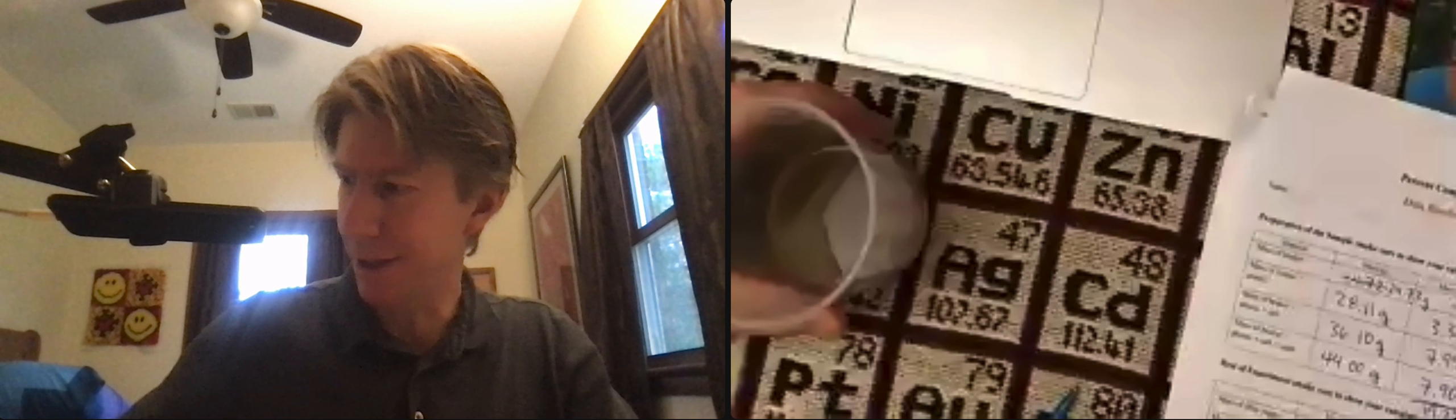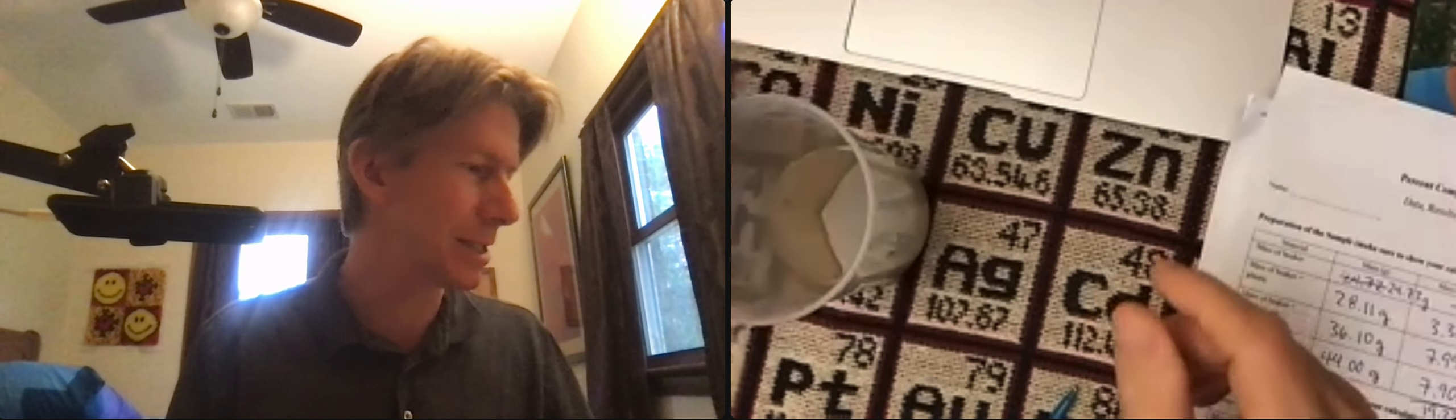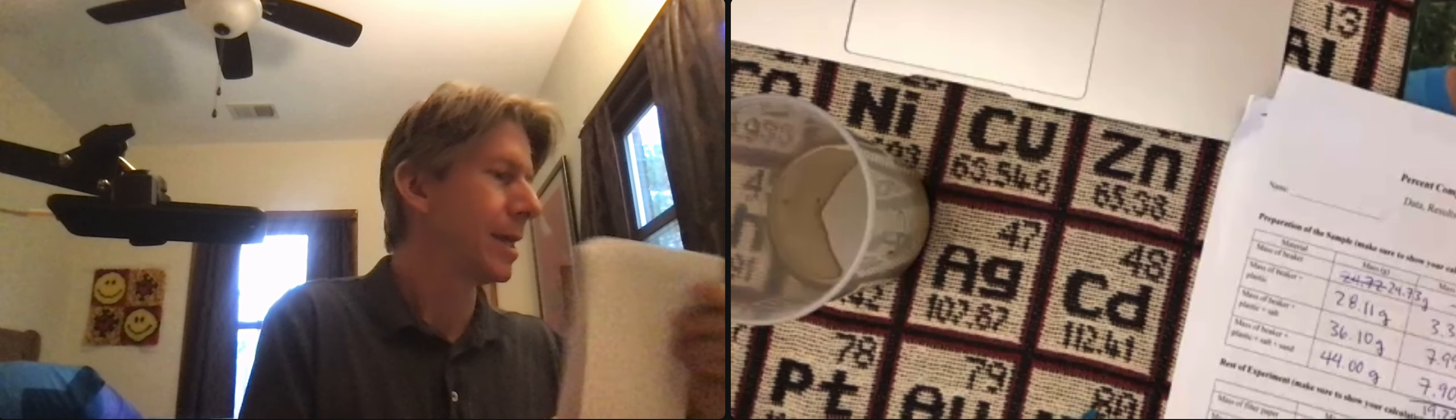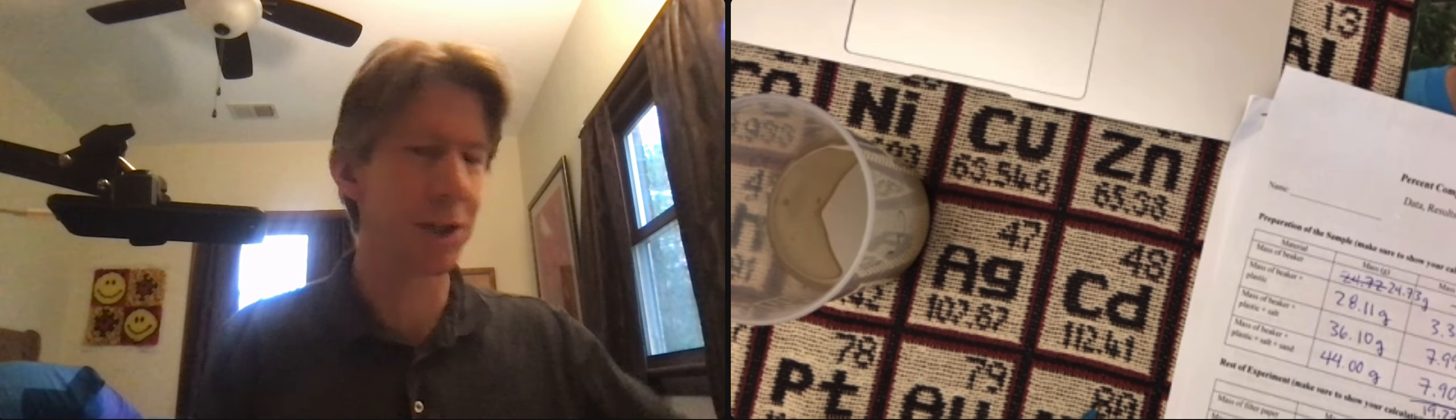We're going to set aside the 50 milliliter beaker with the plastic pieces in it. Now we're going to work on separation of salt from sand.